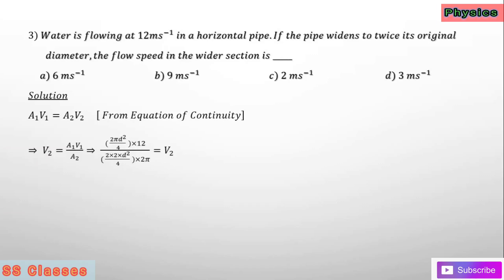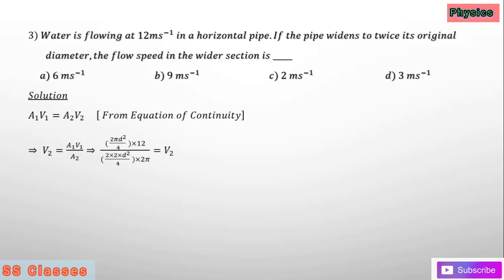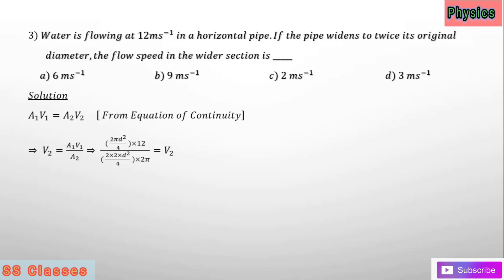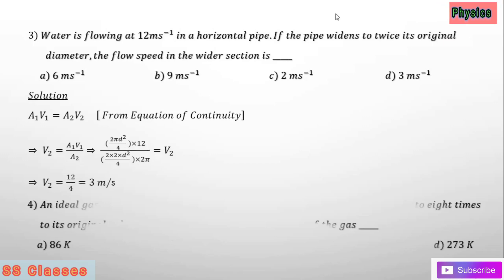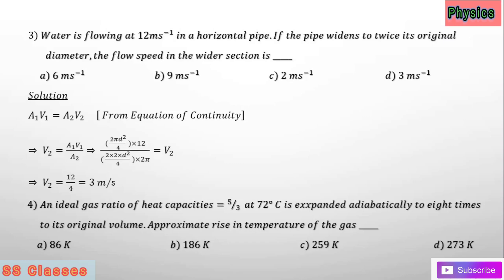Question number three: we have to use the equation of continuity. Area and velocity are given. Use the formula π d squared by 4, where r equals d by 2. Then A1 V1 by A2 gives (2π d² / 4 × 12) / (2 × d² / 4 × 2π), and you get V2 equals 12 by 4, that is 3 meters per second.